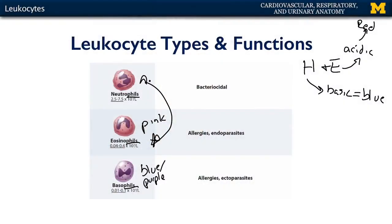Basophils are the least common leukocyte. Their granules also contain substances such as histamine and some serotonin, and they're involved in modulating allergic responses. But more often than not, their specialty is for ectoparasites, such as fleas, ticks, and the like.